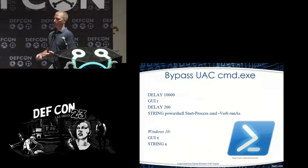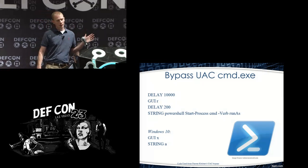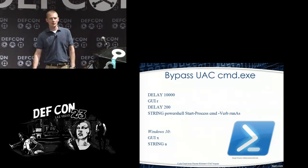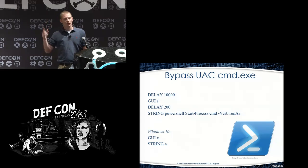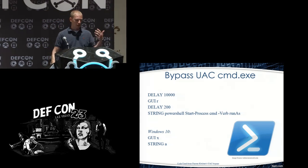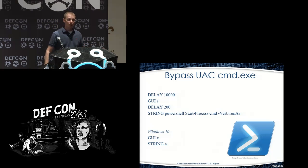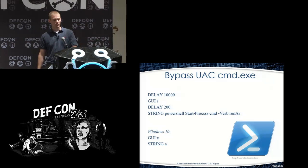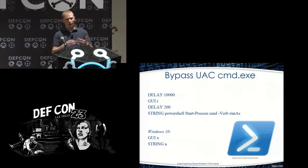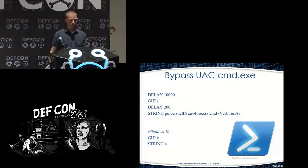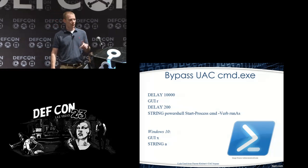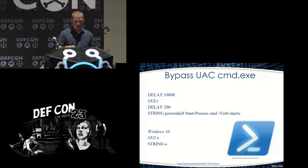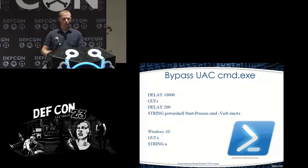Here's the first step of the payload: DELAY 10000 — 10 seconds — to allow Windows to finish loading drivers when the device is first plugged in. Then it executes GUI R to open the Run dialog, delays 200 milliseconds for the box to appear, then types a PowerShell command: Start-Process cmd -Verb RunAs, which opens a command prompt requesting admin credentials. Side note: on Windows 8 and 10, you can just do GUI X then A to open an admin command prompt directly.